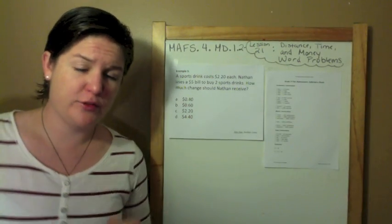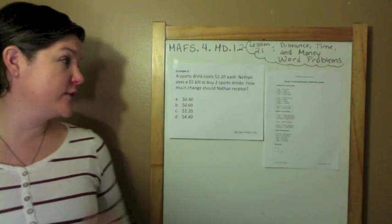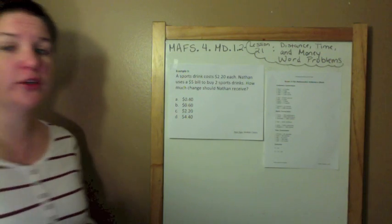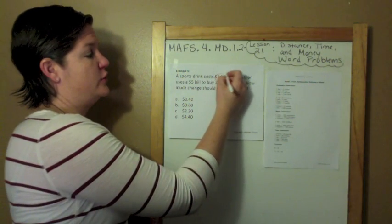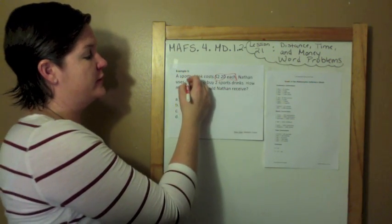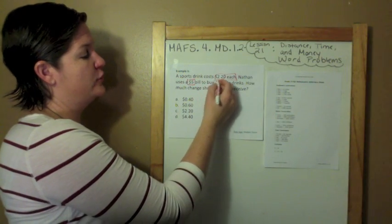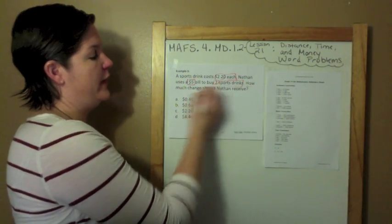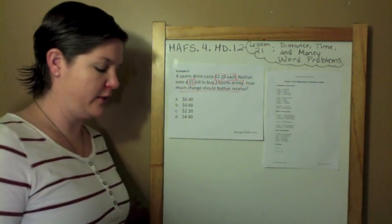Example three, this one should not take us too long. A sports drink costs $2.20 each. Nathan uses a $5 bill to buy two sports drinks. How much change should Nathan receive?